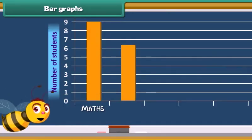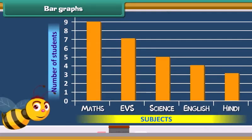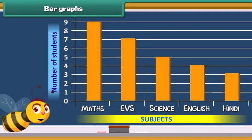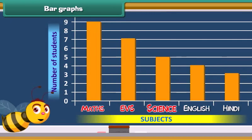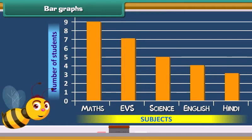Given chart is known as the bar graph. These graphs are another way of data representation. A bar graph uses bars to represent data. In the given graph subjects are listed at the bottom and number of students is given at the side of the bar graph.